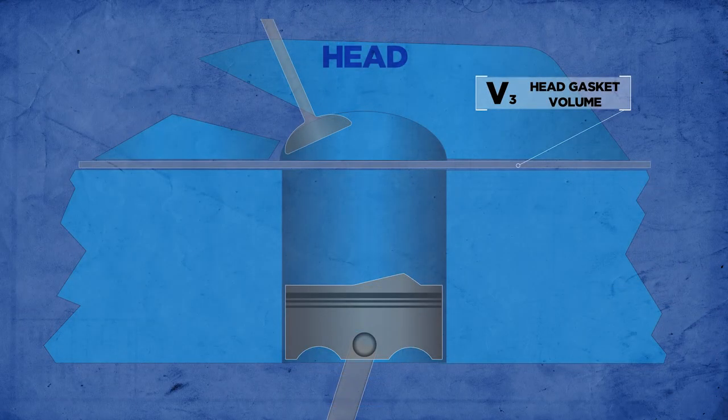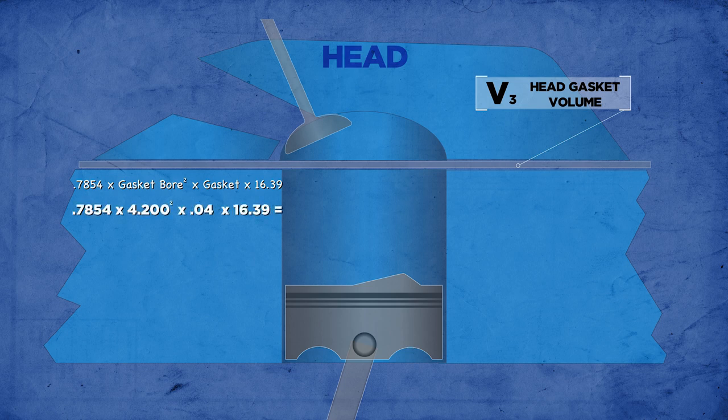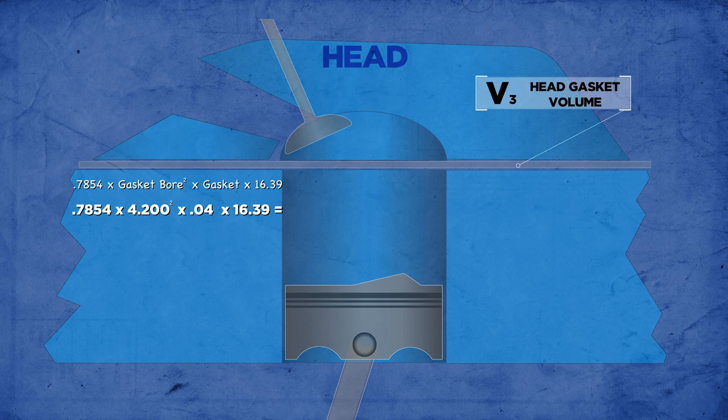The third measurement is head gasket volume. The manufacturer will provide the bore and compressed thickness of the gasket and we'll use those numbers much like we did when measuring the cylinder volume. With a 4.200 bore and 40 thousandths compressed thickness, this yields a gasket volume of 9.08 cc's.